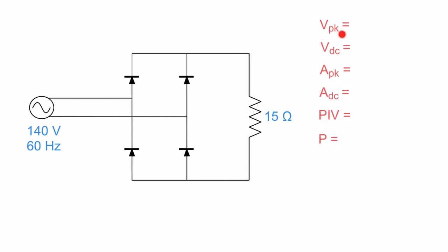I'm going to try to determine my voltage peak, my voltage DC at the load, my current peak, my current at the load, the peak inverse voltage of the diodes, and the power being dissipated at the load.